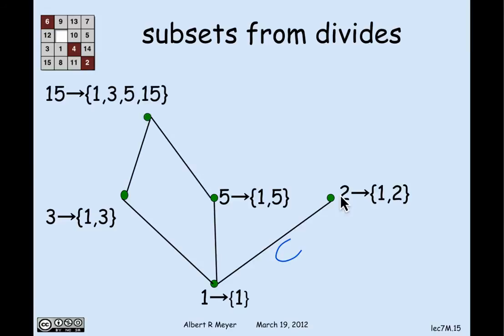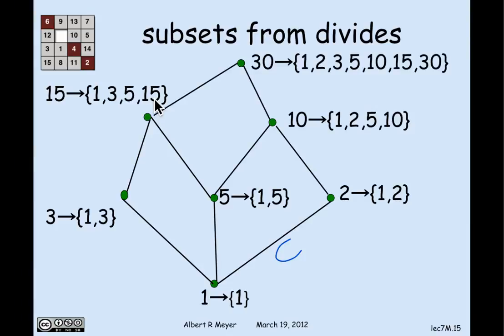And at the next level, I'm going to map 15 to all of the numbers that properly divide 15 along with 15. So 1, 3, 5, and 15 are what the number 15 maps to. That's a set. And likewise, 10 maps to 1, 2, 5, 15, and 30 maps to all of the numbers that are below it, including itself.